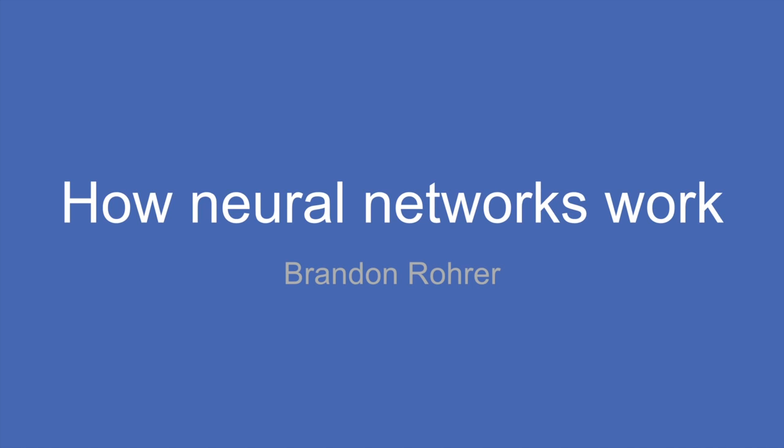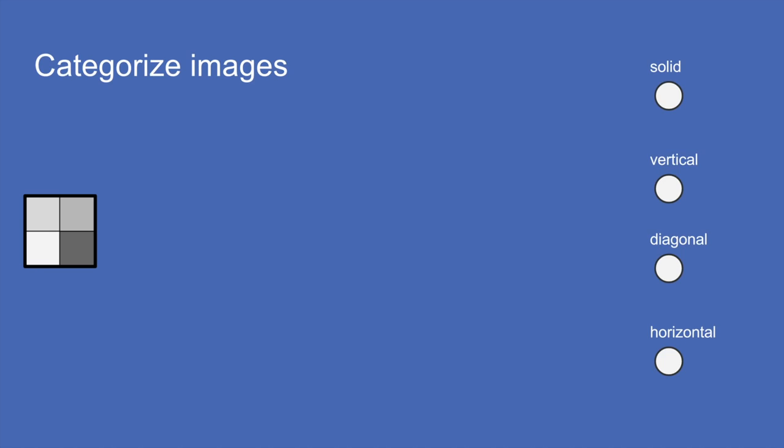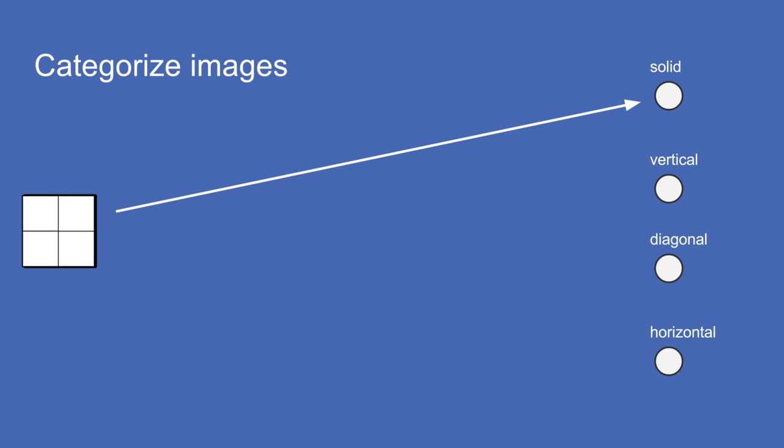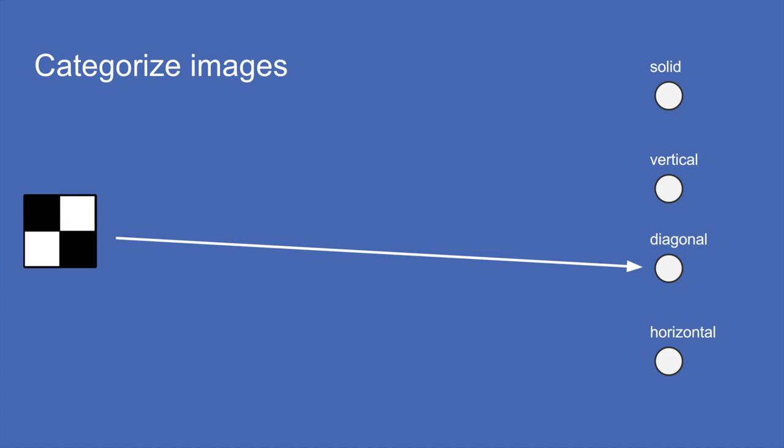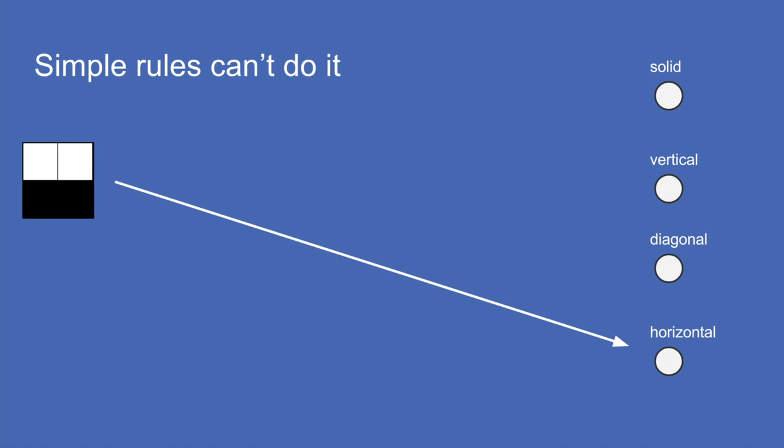Neural networks are good for learning lots of different types of patterns. To give an example of how this would work, imagine you had a four-pixel camera — not four megapixels, but just four pixels — and it was only black and white. You wanted to go around and take pictures of things and determine automatically whether these pictures were of a solid all-white or all-dark image, a vertical line, a diagonal line, or a horizontal line.